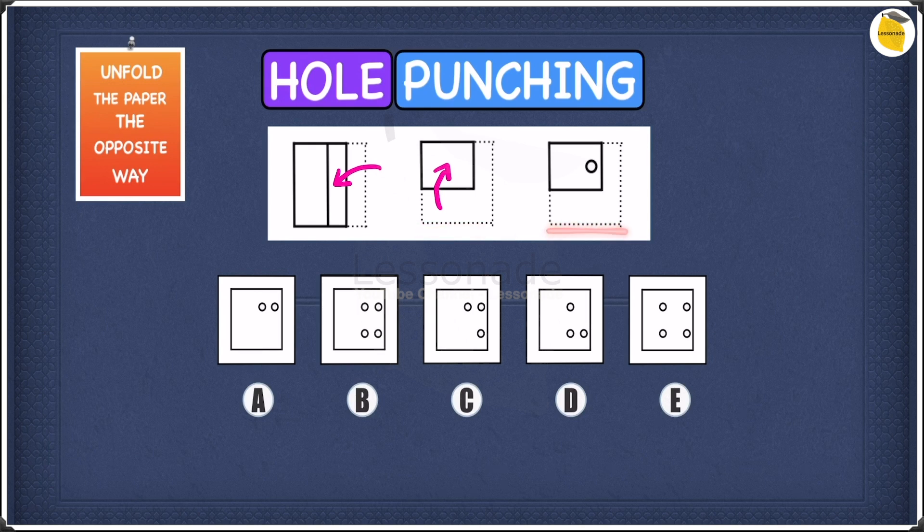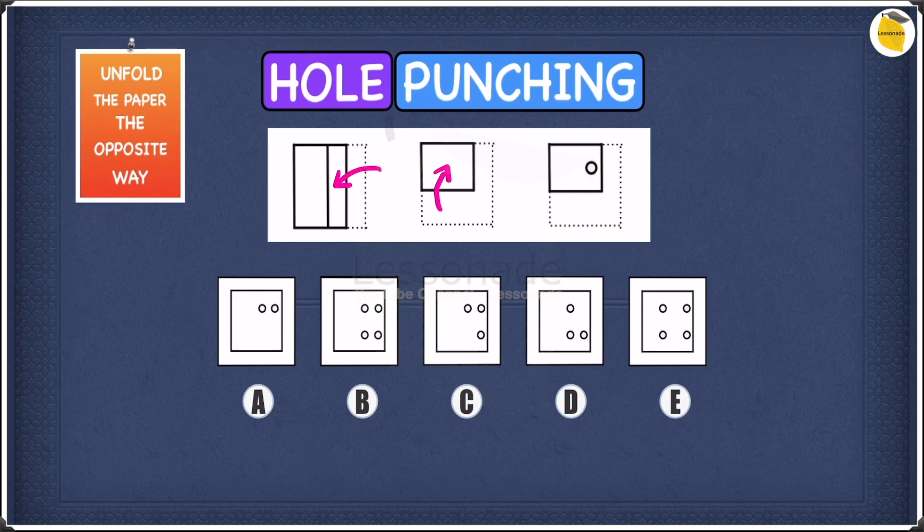And finally, in figure 3, a hole has been punched on the right-hand side. Since we now know how the paper has been folded in figure 1 and 2, let's unfold the paper in figure 3 to find our answer. So we're going to work our way backwards, so in the opposite direction. So let's start by unfolding the paper downwards.